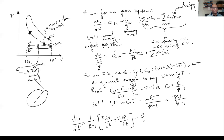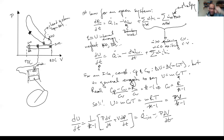So dU/dt becomes (1/(k−1)) times the derivative of the product pV, giving (1/(k−1))·(p·dV/dt + V·dp/dt). This equals Q-dot in minus the boundary work rate p·dV/dt, plus the sum of mass flow rates times enthalpy. Now this is starting to look very similar to what we had for the closed system.